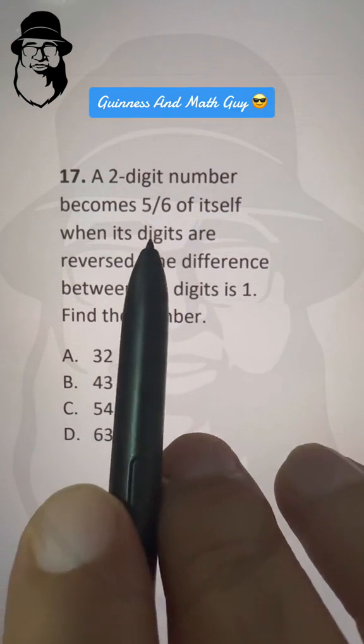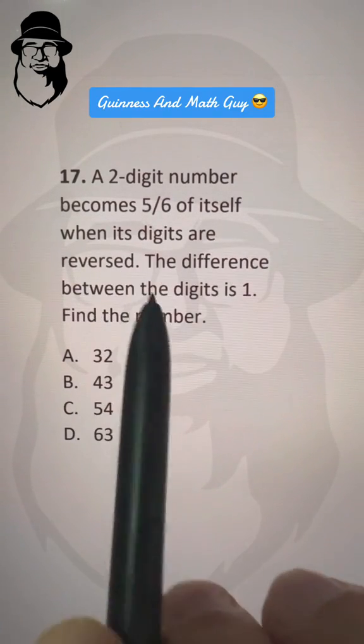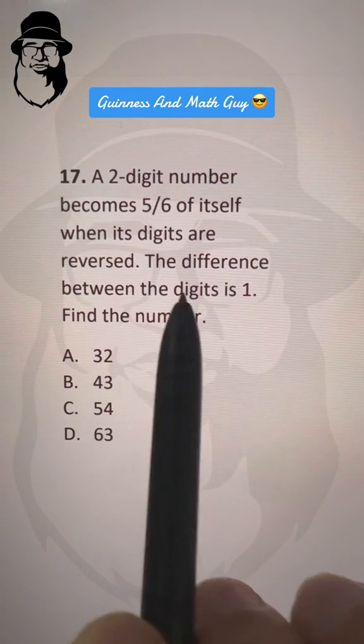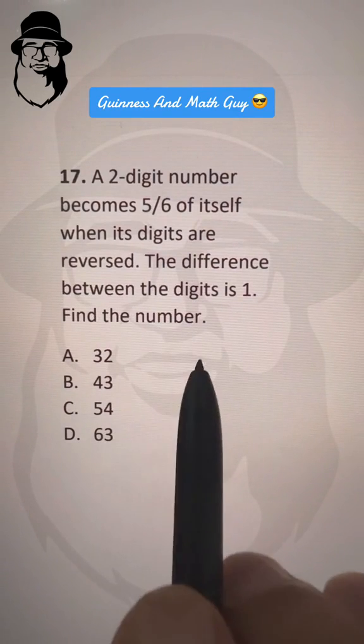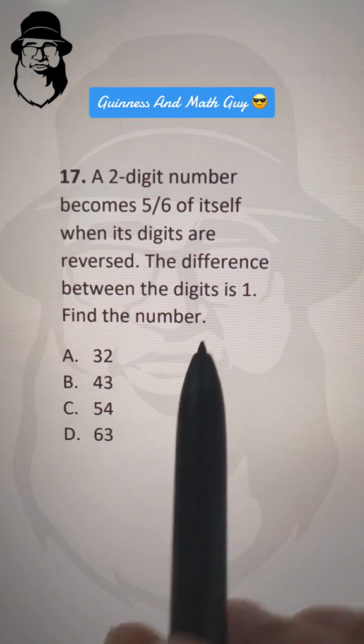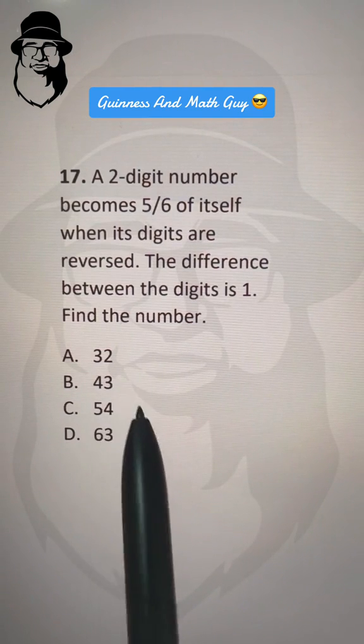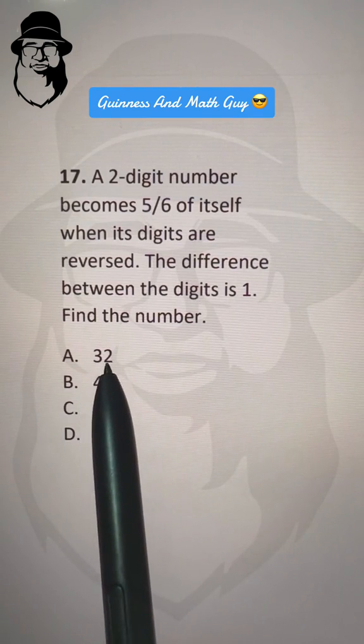A two-digit number becomes 5/6 of itself when its digits are reversed. The difference between the digits is 1. Now, the difference between the digits in these choices - all of them have a difference of 1.